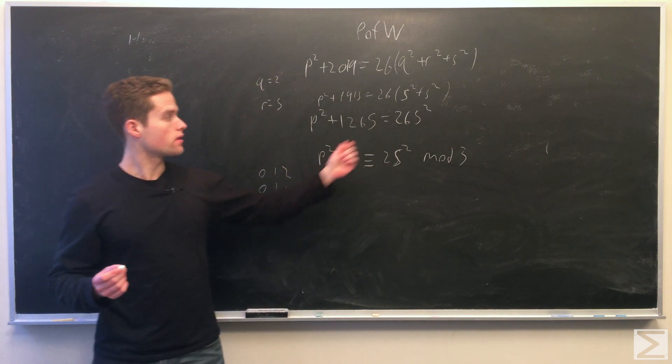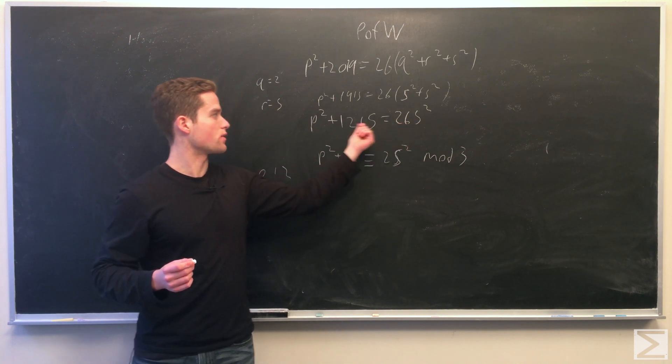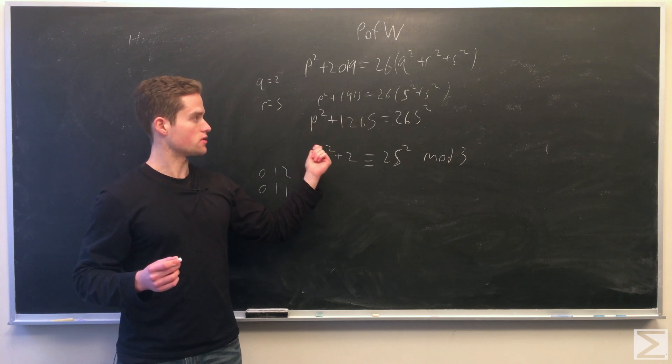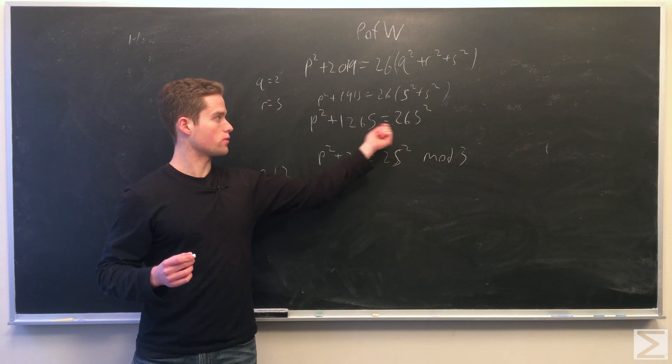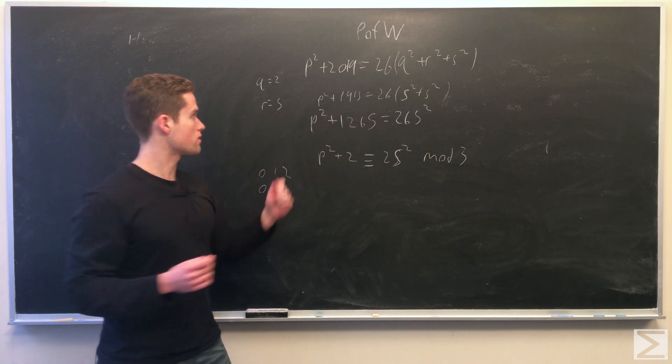We cannot have s equal to 3 because then this equation would be 26 times 9 equals 1265 plus some positive integer, which is impossible because 26 times 9 is 234, which is much less than 1265. So s is not equal to 3 and we have p equals 3.